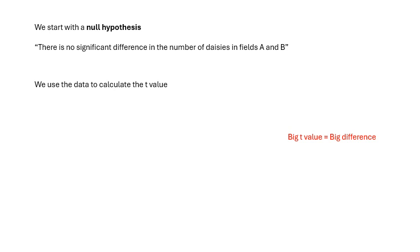So how do we do it? We start with a null hypothesis. My null hypothesis is that there is no significant difference. Then we are going to test our null hypothesis to see if it's probably true or probably false. We use the data to calculate the T-value. The T-value is the difference which takes into account all those extra things. If we get a big T-value, then there's a big difference and there's probably a significant difference. If we get a small T-value, then there's a small difference and there's probably not a significant difference.